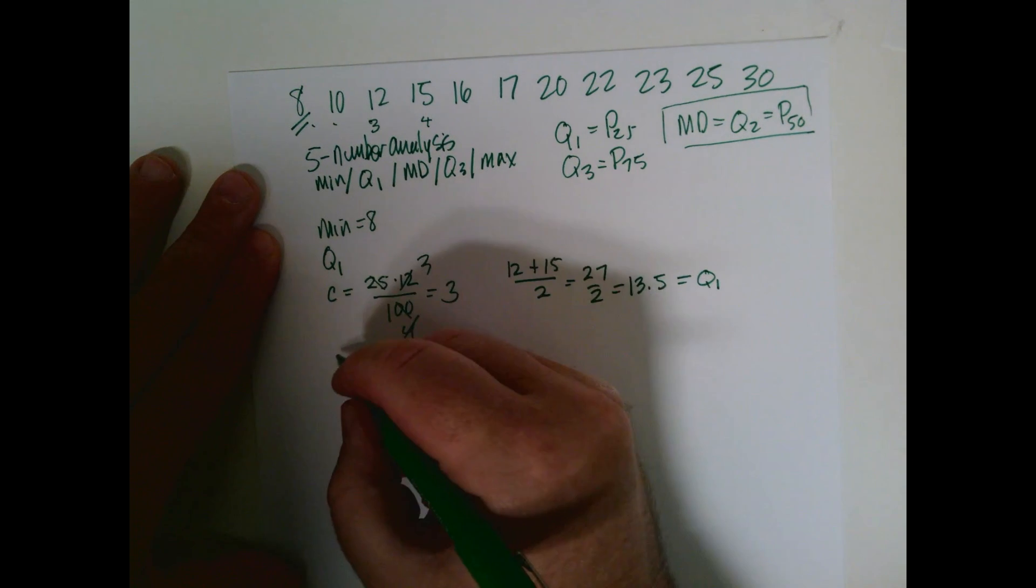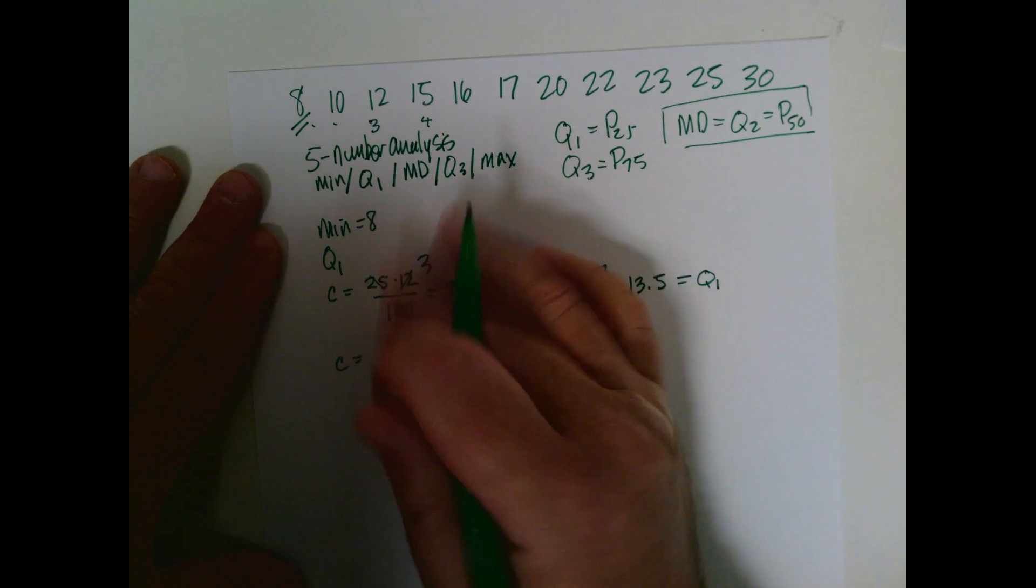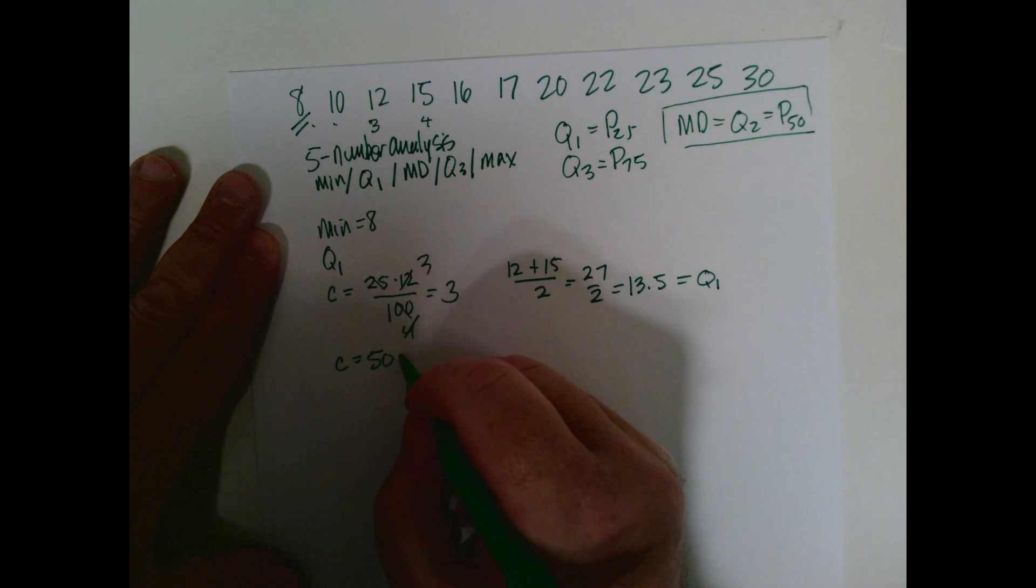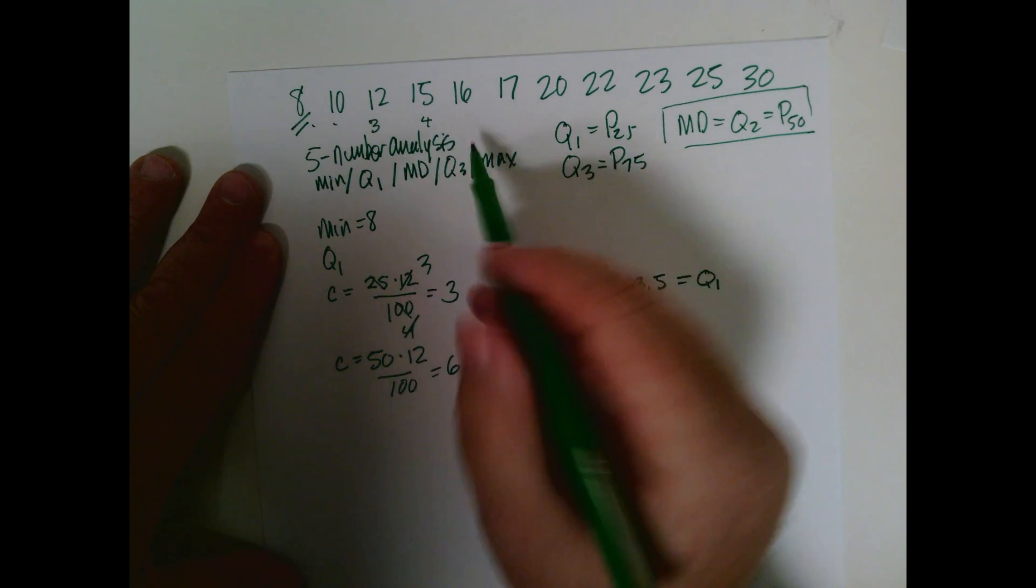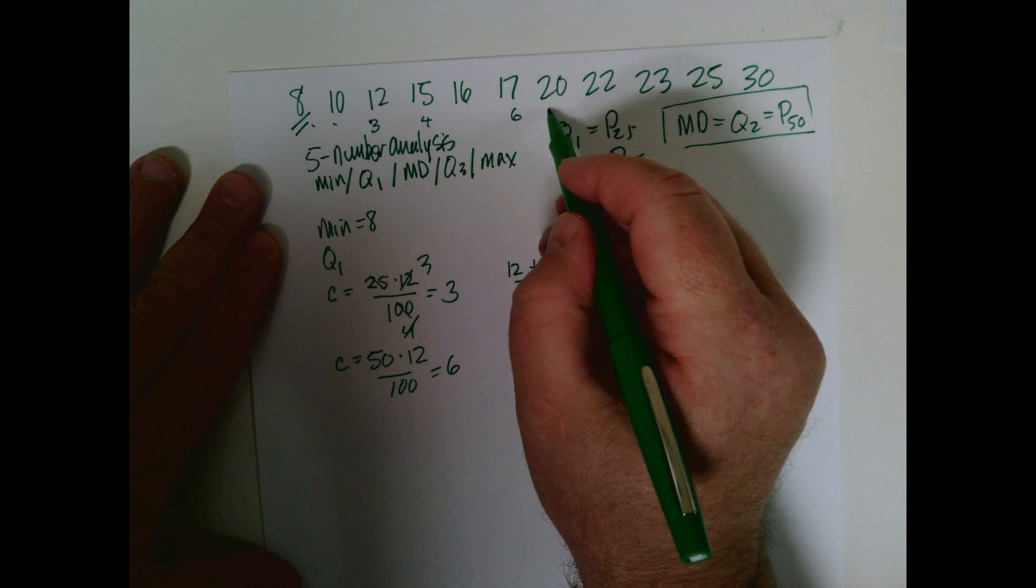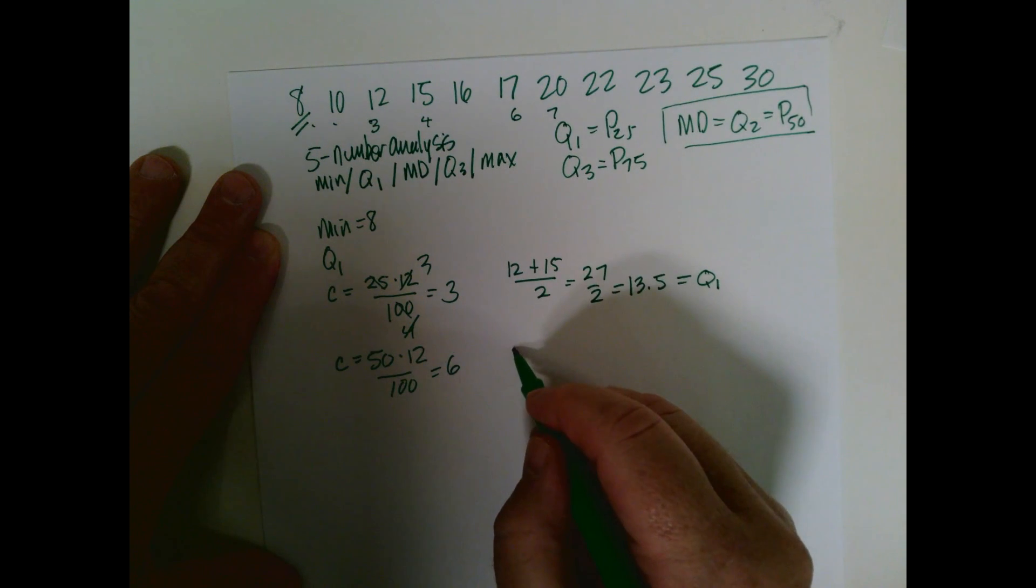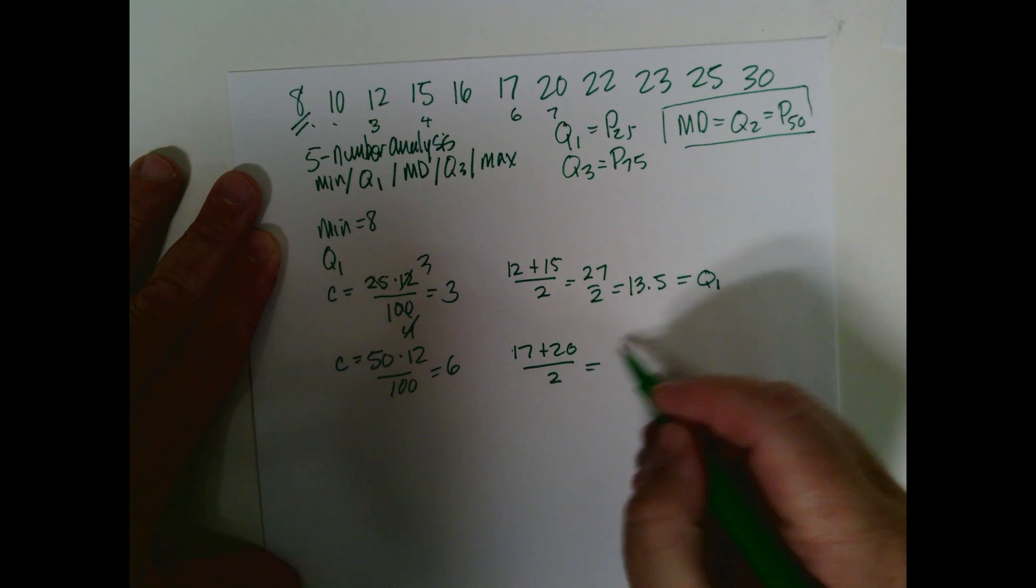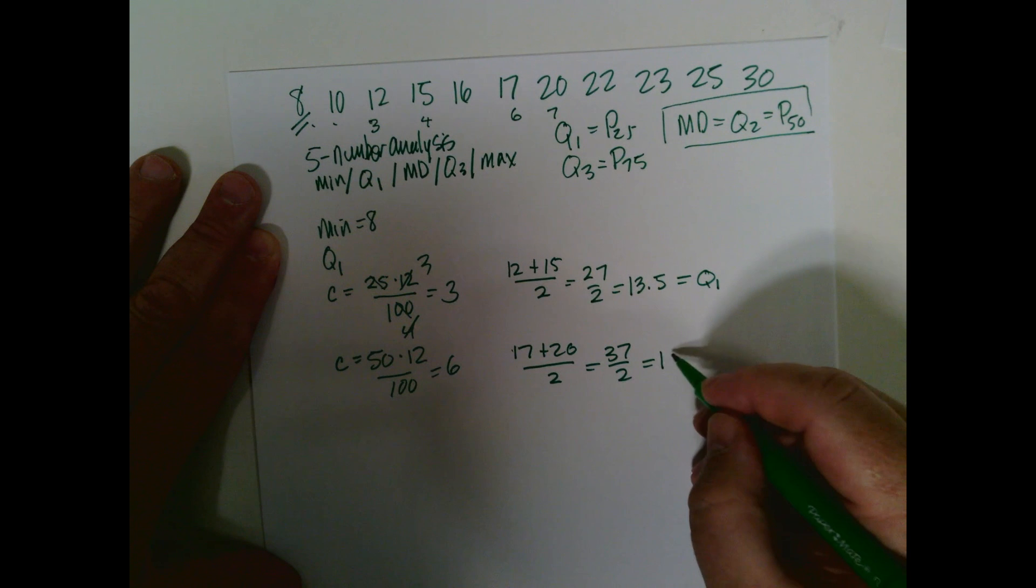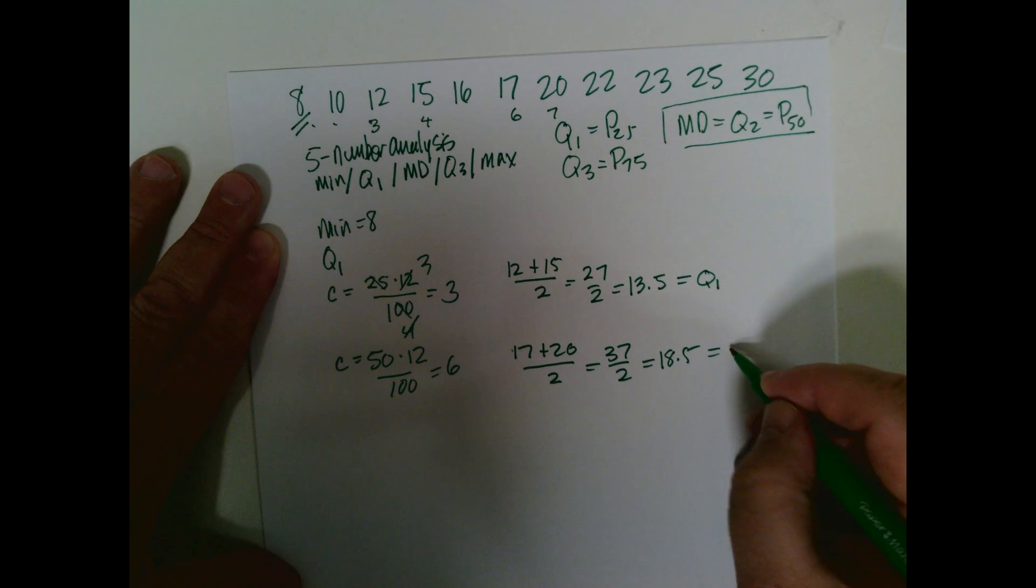Okay, our median, again, we can do the median. We did it before like a half, but you can do it with the percentile formula. 50 times 12 over 100, which is 6. So we would count to 5, 6, one more, and we would get 7. So you'd have 17 plus 20 divided by 2. That's 37 divided by 2, which is 18.5. So that's our median.